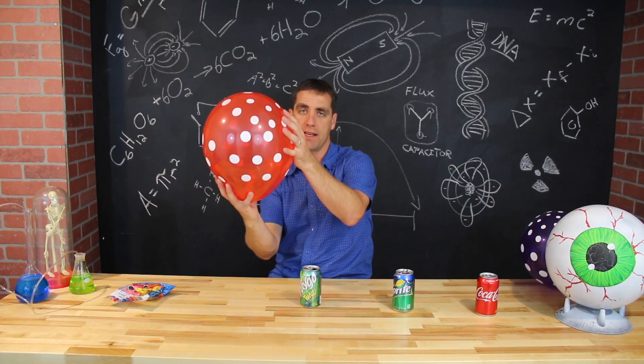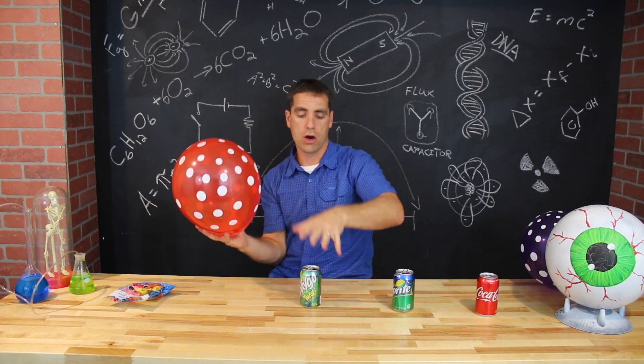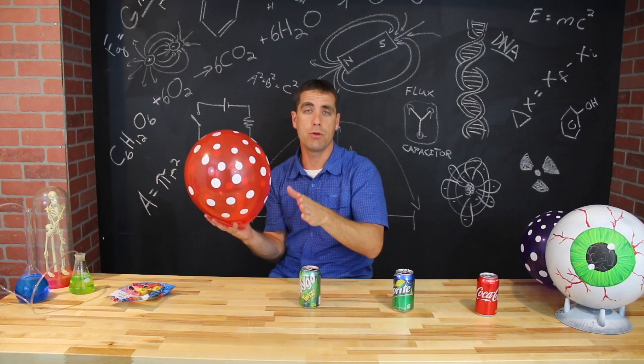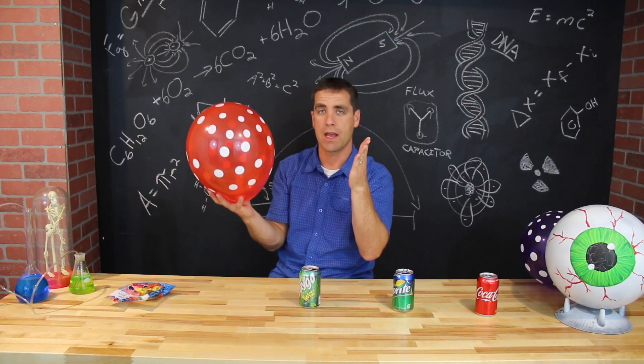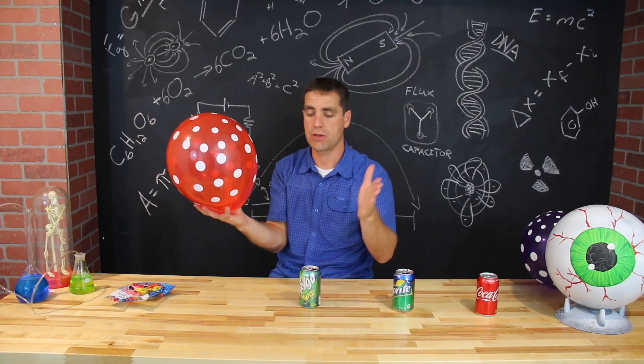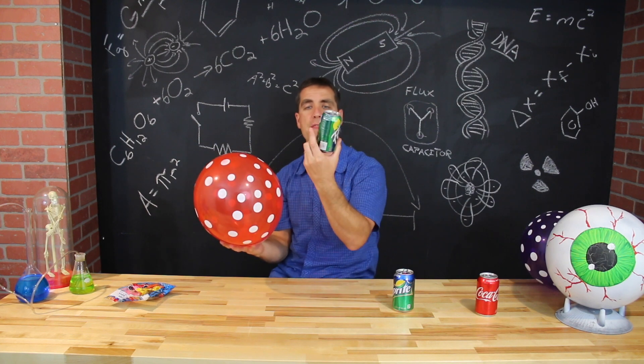The negative charges, the electrons on the balloon here, are going to cause the electrons in the can to move to the opposite side. Okay, positive charge does not like positive charge, but what that means is on this side there will be positive charge.